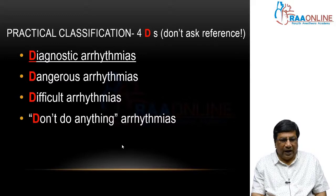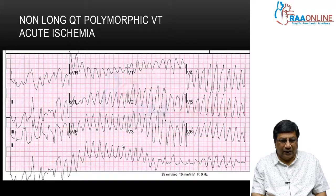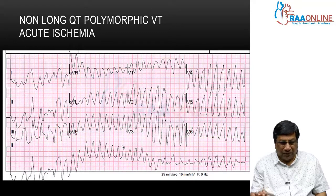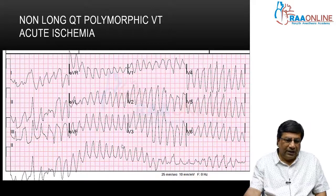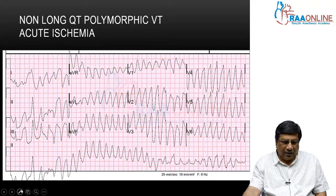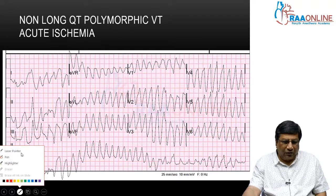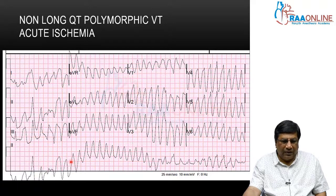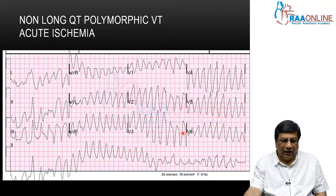First, we look at Diagnostic arrhythmias — what arrhythmias will tell you the patient has got Acute Coronary Syndrome. Here is an ECG. This is a classical polymorphic ventricular tachycardia — a wide QRS irregular tachycardia with varying shape and varying width of the QRS.